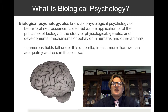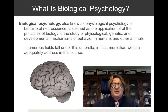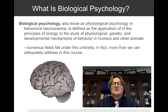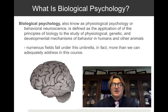Biological psychology is also referred to as physiological psychology or behavioral neuroscience, and it's defined as the application of the principles of biology to the study of physiological, genetic, and developmental mechanisms of behavior in humans and other animals.